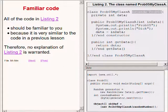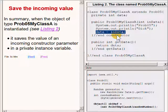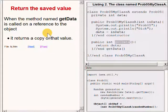All of the code in listing 2 on the upper right of your screen should be familiar to you because it is very similar to the code in a previous lesson. Therefore a detailed explanation should not be needed. Briefly, when the object of type prob05myClassA is instantiated, it saves the value of an incoming constructor parameter in a private instance variable named data. When the method named getData is called, it returns a copy of that value.